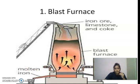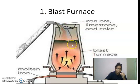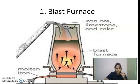Above the hearth there are a number of pipelines — called tuyeres — through which hot air is blown inside. This blast furnace is a combustion type furnace, as it uses coke as a reducing agent as well as fuel.